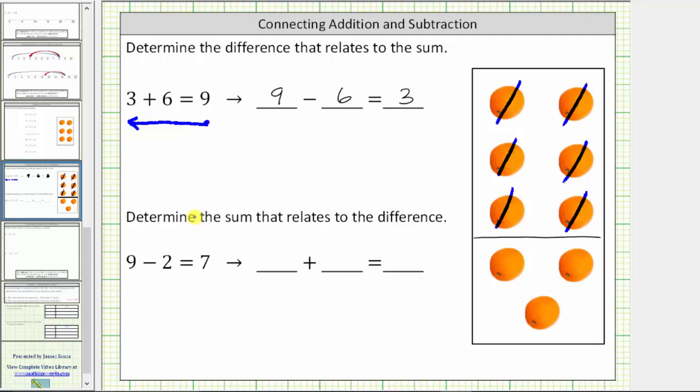Now let's look at the second problem. We're asked to determine the sum that relates to the difference. We are given the difference nine minus two equals seven.